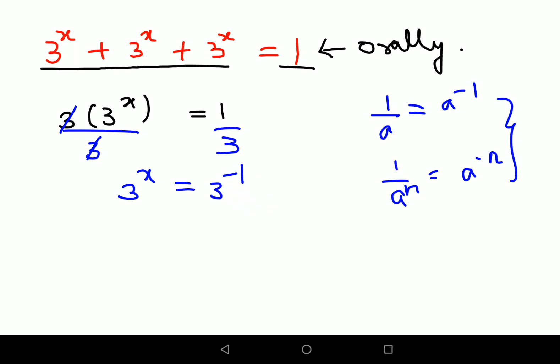Now if you look closely, the bases are the same, therefore I can directly say that the value of x is -1. Let's plug in this value: 3^(-1) + 3^(-1) + 3^(-1).